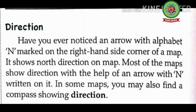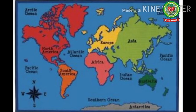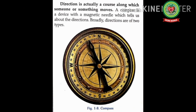After knowing the north direction, we can find other directions easily. In some maps, you may also find a compass showing direction. Look at the world map — you may find a compass on the left side corner of a map; this compass indicates directions. Direction is actually a course along which someone or something moves — mark this line, this is the definition of direction. A compass is a device with a magnetic needle which tells us about directions.